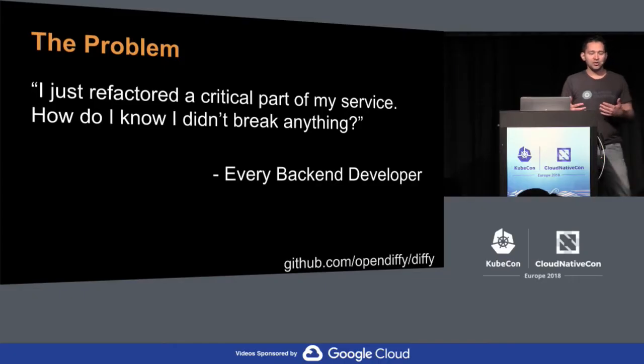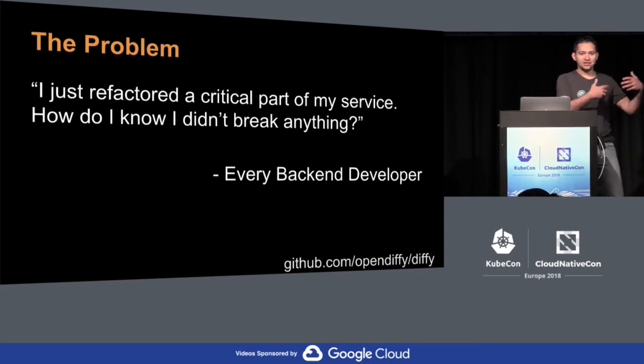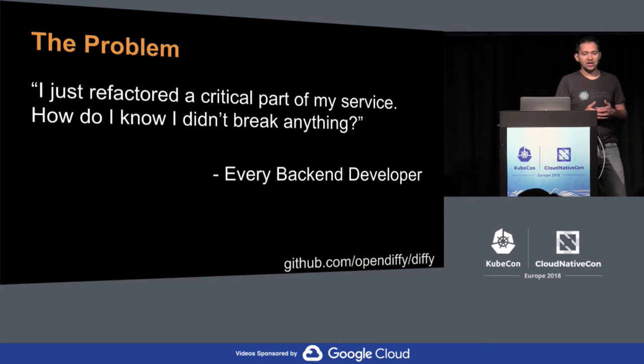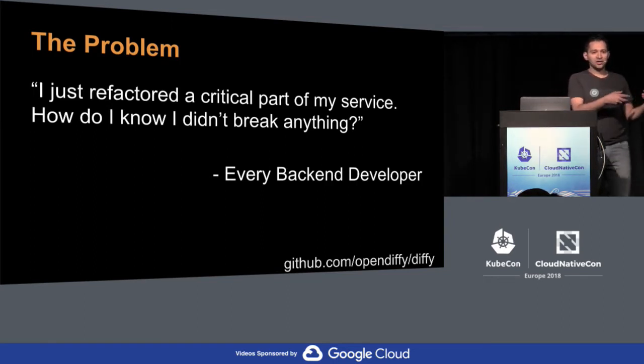As a developer, if you own any backend services, you're shipping new features all the time, whether you follow a sprint model or some sort of Kanban model. As you're creating new features in your code base, you're refactoring existing code to make the class hierarchies more coherent. And it is almost always impossible to ship a new feature without modifying code that affects other features as well.